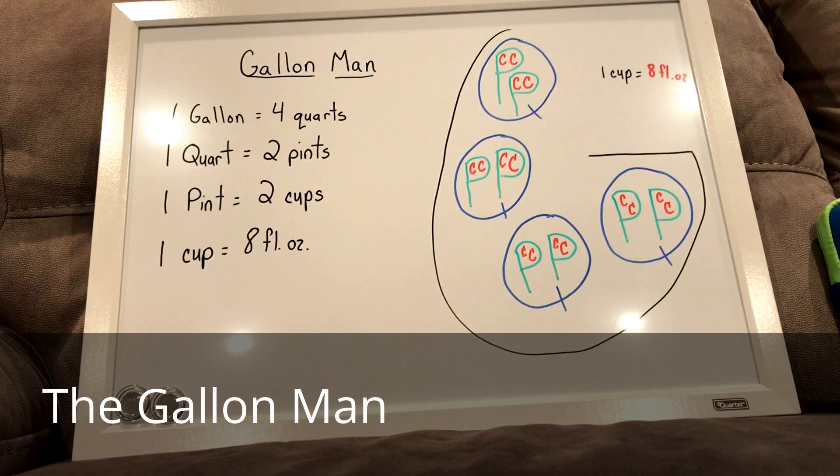So if you're looking inside of a quart, all you would have to do is count up how many C's are inside of a Q. And that would be one, two, three, four. So there are four cups in a quart.